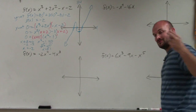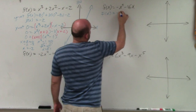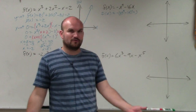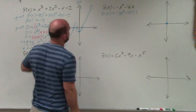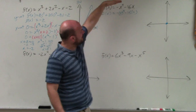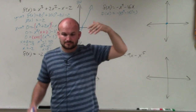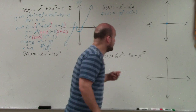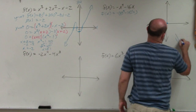Now let's move on to the next one. For the end behavior: we have an even degree, which is 4, and our leading term is negative 1. When our degree is even, the graph either rises left and rises right, or falls left and falls right — all dependent on the leading coefficient. Since this is negative, we know our graph is going to fall left, fall right.